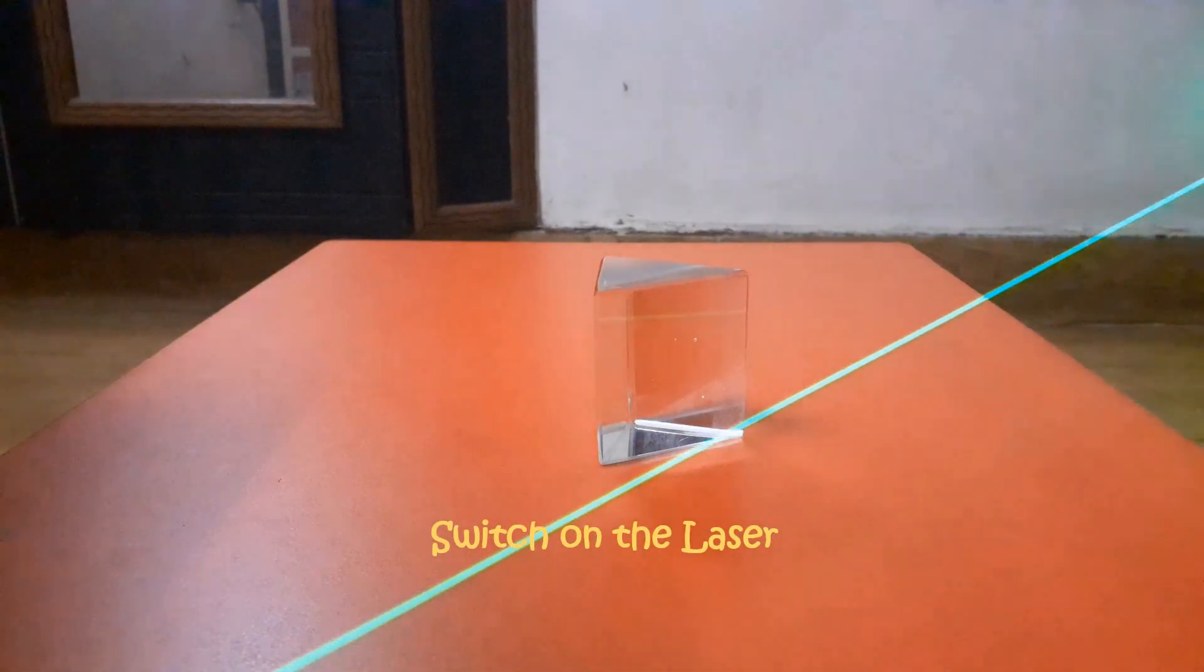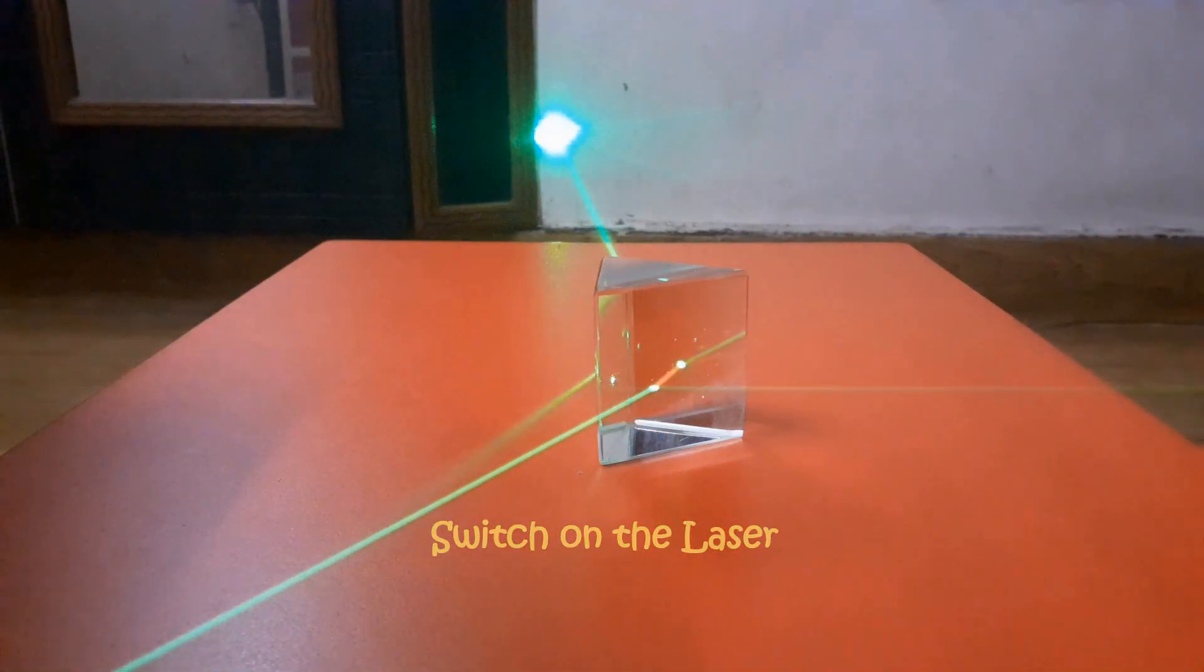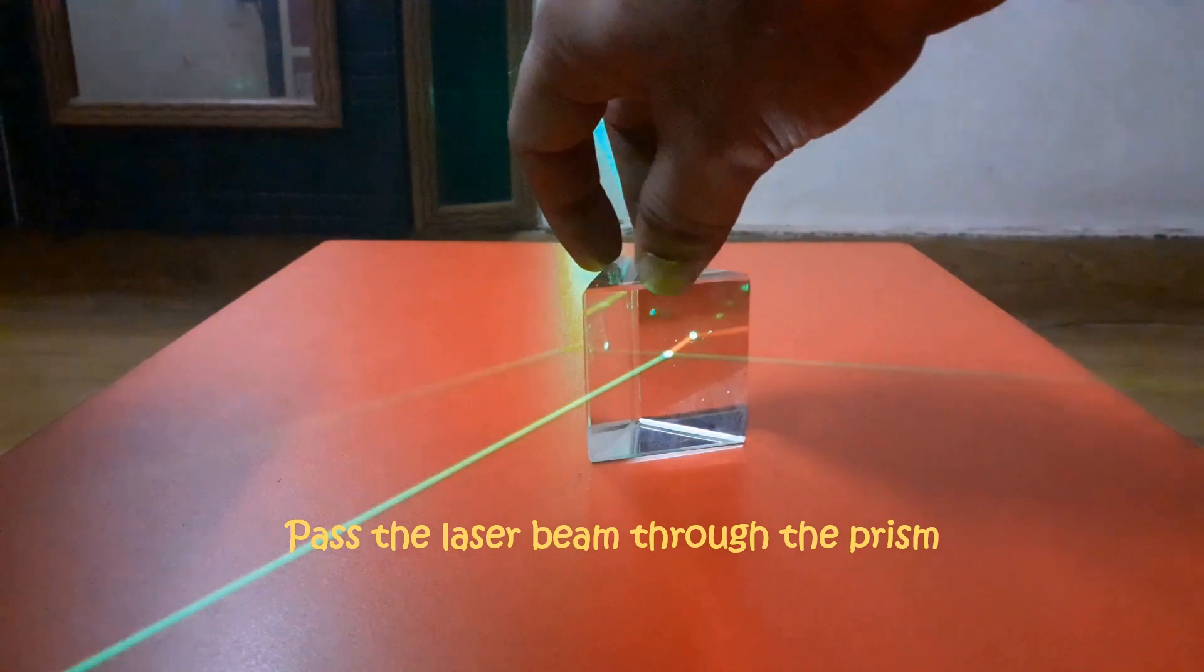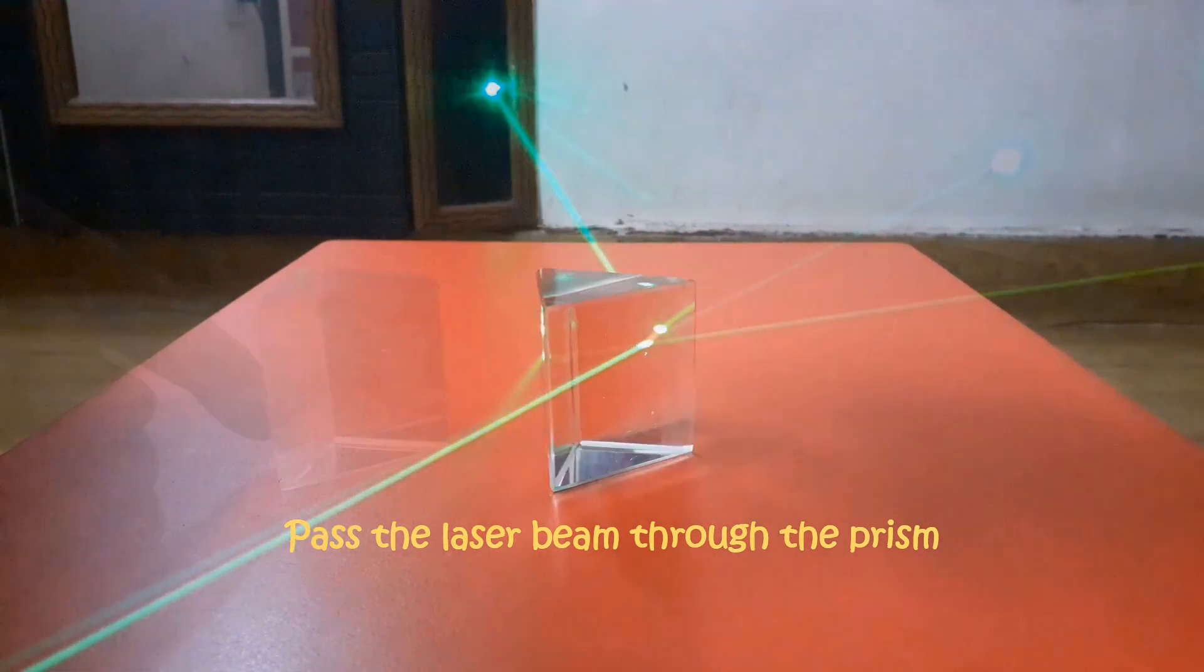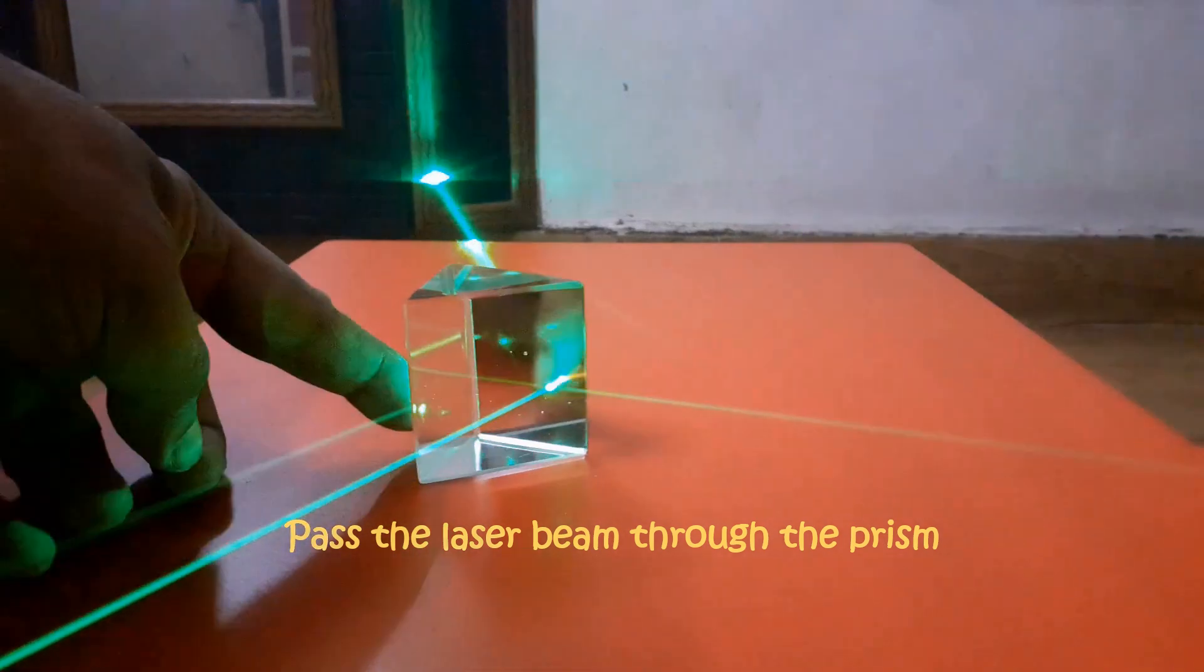Switch on a laser torch. You will see the path of a laser beam. This beam travels in a straight line. When a prism comes in the path of the laser beam, the beam deviates from its initial direction.